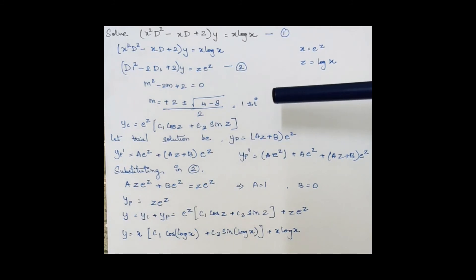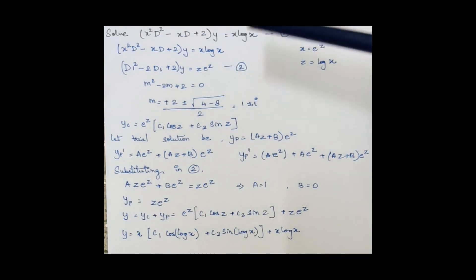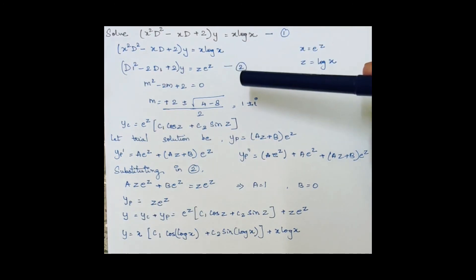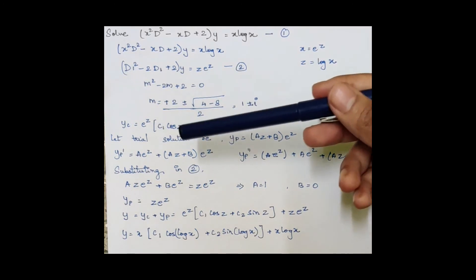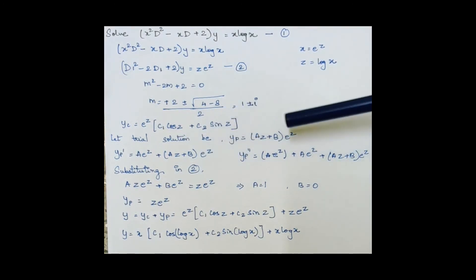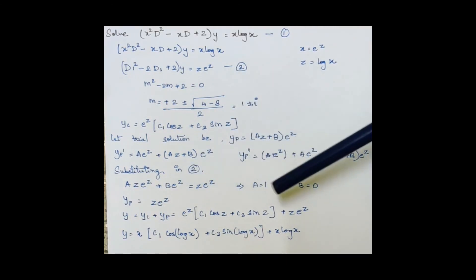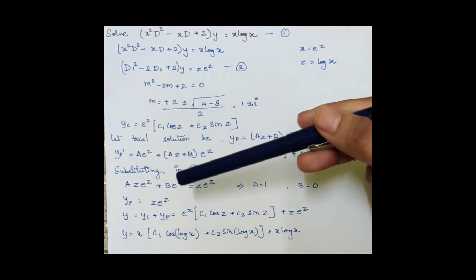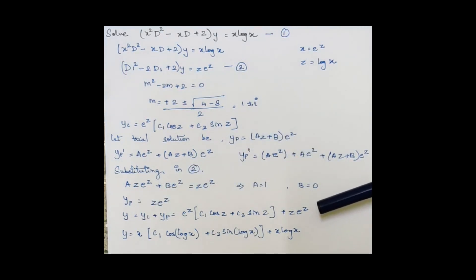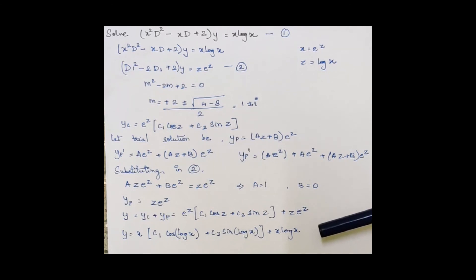We apply the undetermined coefficients method to find the particular integral. Since x·log x converts to z·e^z, our trial solution is yp = (az + b)·e^z. Differentiating once: yp' = a·e^z + (az + b)·e^z; differentiating twice gives yp''. Substituting into the equation and solving, we obtain a = 1 and b = 0, so the particular integral is z·e^z. The full solution is the sum of the complementary function and z·e^z. Substituting log x for z gives the final solution for the required differential equation.